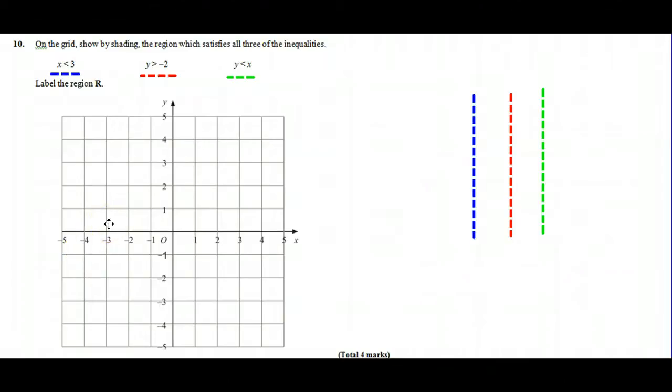Hi there, this is an inequalities question and specifically we are graphing the inequalities and finding a region. So on the grid, show by shading the region which satisfies all three of the inequalities.